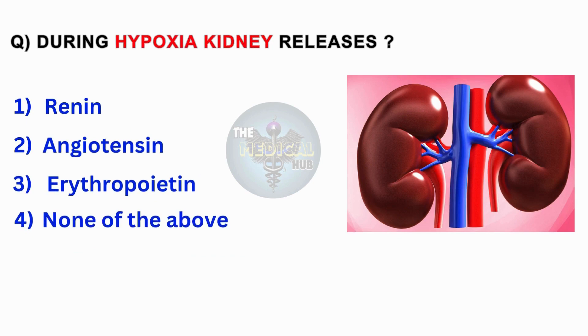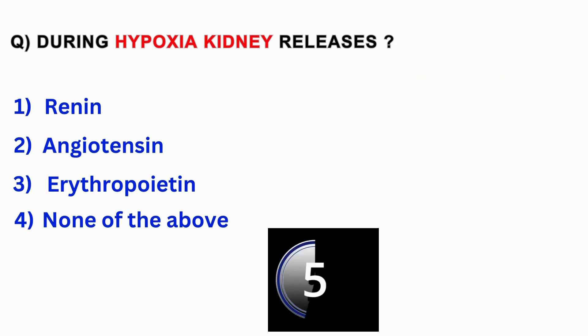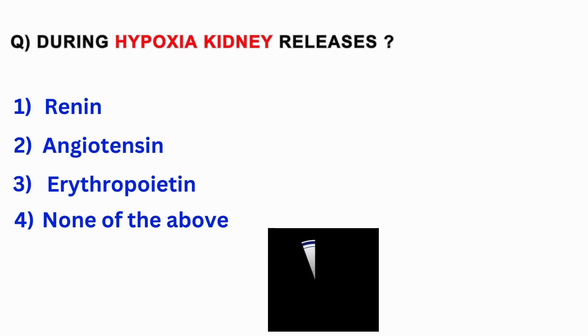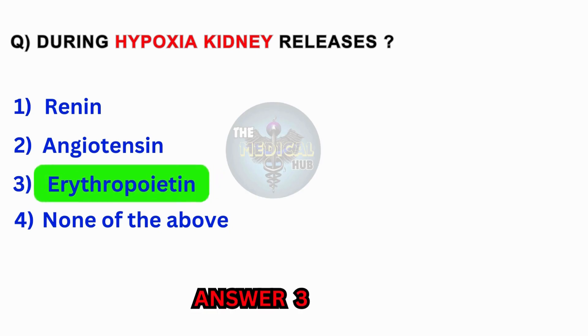During hypoxia, the kidney releases? Renin, angiotensin, erythropoietin, none of the above. Answer 3: Erythropoietin.